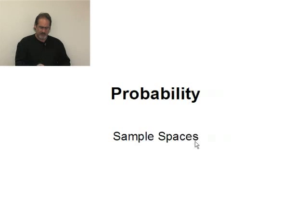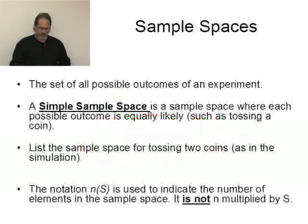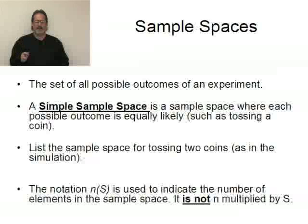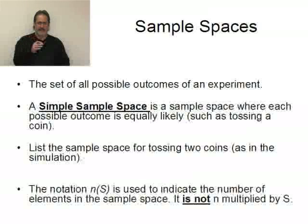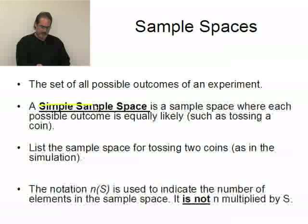Let's take a look at the idea of sample spaces as they relate to probabilities. A sample space is a set of all possible outcomes in an experiment. If I were to take a single coin and flip it, what could happen? I could get a head or a tail. So my sample space would consist of a head and a tail — that's all that can happen, every possible outcome.